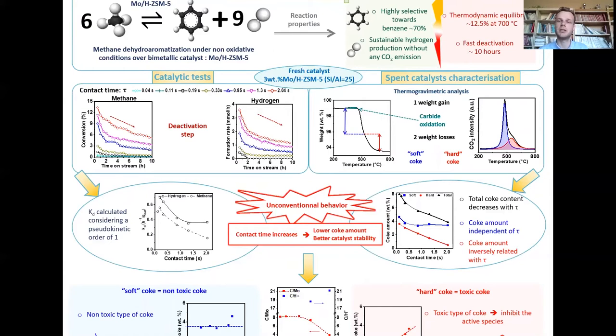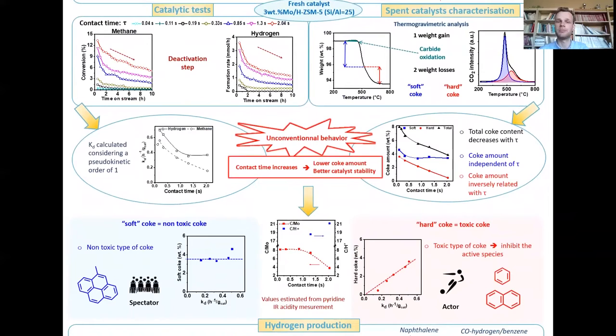The thermogravimetric analysis allows determining two weight losses. From this data, it is also possible to plot the coke amount as a function of contact time. It appears that we have unconventional behavior.